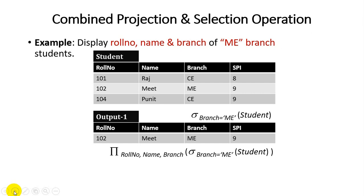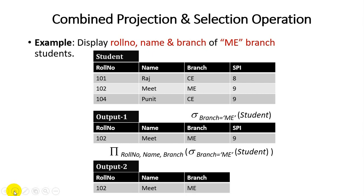Based on the output of sigma branch equals ME, we get all columns — roll number, name, branch, and SPI — but the user wants only roll number, name, and branch. So we apply a projection operation on those three attributes. The final output displays only roll number, name, and branch of ME branch students. This is how we use the combination of projection and selection operations.